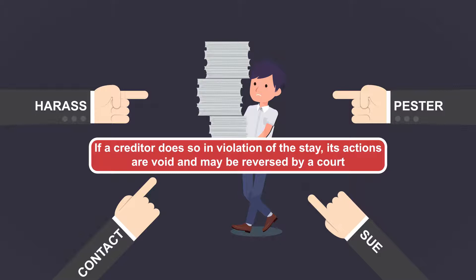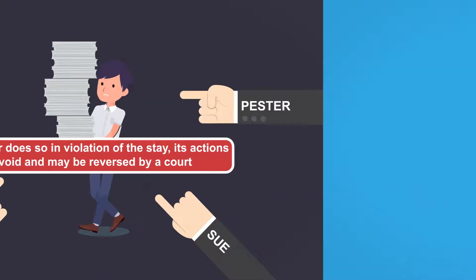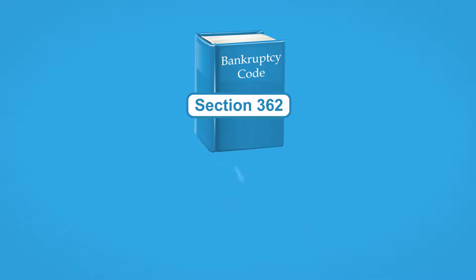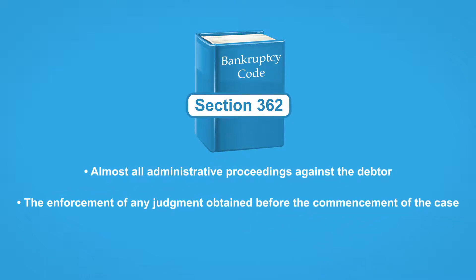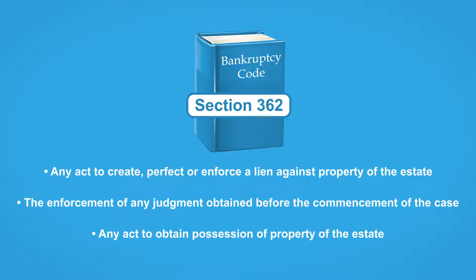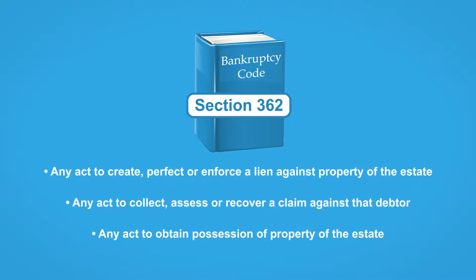The Automatic Stay provisions are broad and can be applied to all types of creditors, including governmental units. The stay applies, among other things, to almost all administrative proceedings against the debtor, the enforcement of any judgment obtained before the commencement of the case, any act to obtain possession of property of the estate, any act to create, perfect, or enforce a lien against property of the estate, any act to collect, assess, or recover a claim against the debtor, and the set-off of any debt owing to the debtor.